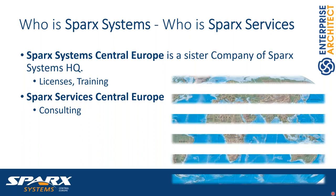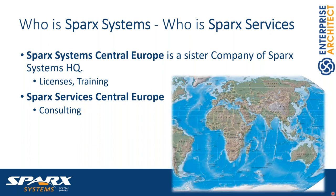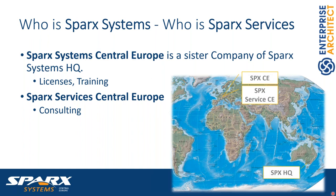Sparx Systems Central Europe is a sister company of Sparx HQ. We provide licenses and training at Sparx Systems, and as Sparx Service Central Europe we also provide consulting around Enterprise Architect and your modeling approaches. We are located in Vienna, Austria, and our colleagues at headquarters are located next to Melbourne in the southern part of Australia.